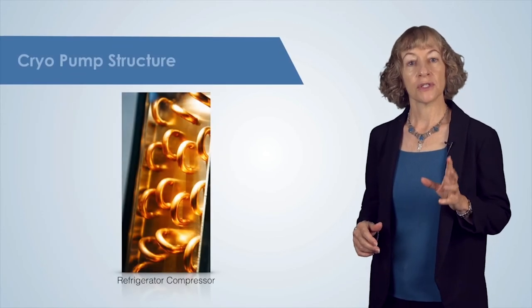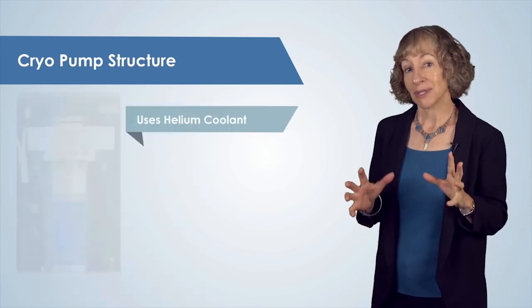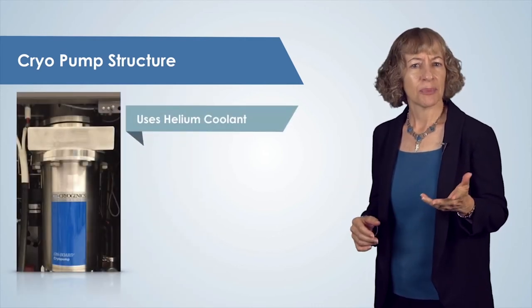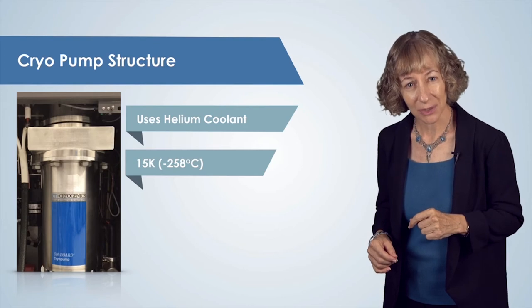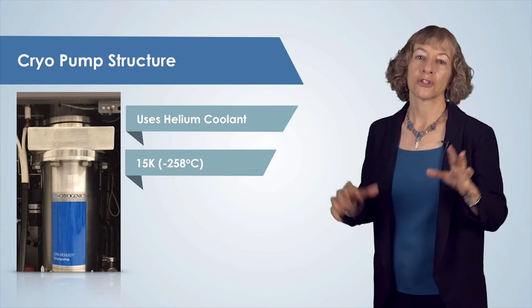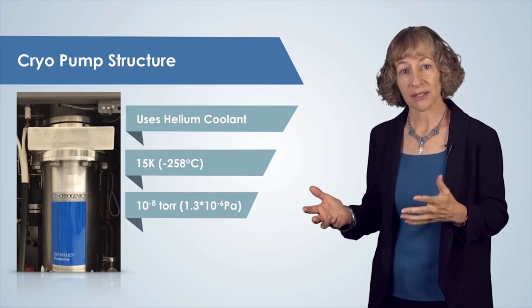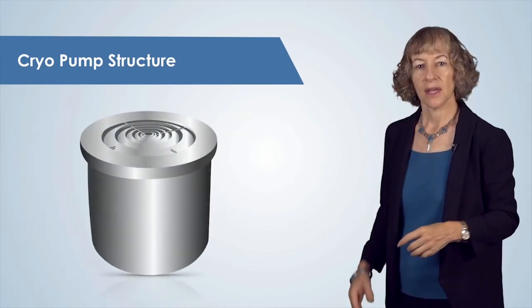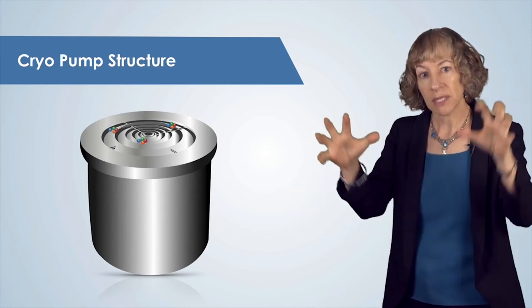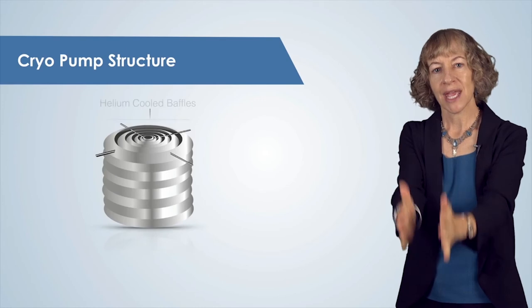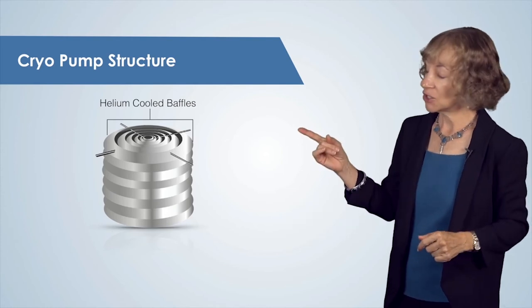A cryo pump uses a compressor similar to a refrigerator, with one big difference — a cryo pump uses helium as a coolant. A cryo pump is typically cooled to 15 degrees Kelvin, which is minus 258 degrees C. A cryo pump can reach pressures down to 10 to the minus 8 torr, or equivalently 1.3 times 10 to the minus 6 pascals, or even lower. The cooled region of the cryo pump has large surface areas, because more surface area means more trapped air molecules. Arrays of helium cooled metal fins, called baffles, provide that frozen surface area, as shown here.